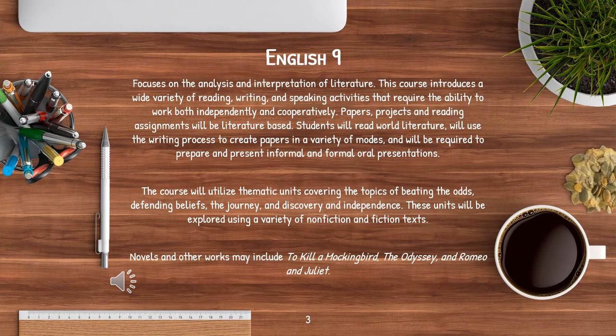English 9 focuses on the analysis and interpretation of literature. This course introduces a wide variety of reading, writing, and speaking activities that require the ability to work both independently and cooperatively. Papers, projects, and reading assignments will be literature-based. Students will read world literature, will use the writing process to create papers in a variety of modes, and will be required to prepare and present informal and formal oral presentations.